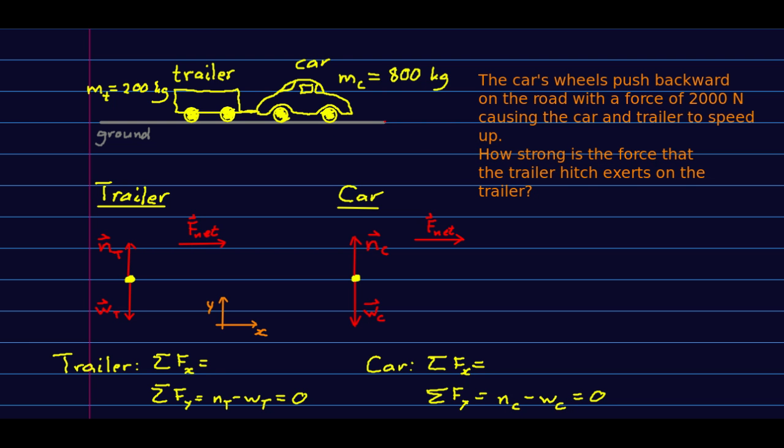Here's a very practical problem. Let's look at a car towing a trailer. And we're told that the car's wheels push backward on the road with a force of 2,000 newtons. And that causes the car and the trailer to speed up. And we want to know what the force is that the trailer hitch exerts on the trailer. So, this is when you're designing things like trailer hitches, you need to be able to design them strong enough to exert the sorts of forces that you expect. And so this sort of a calculation comes up.